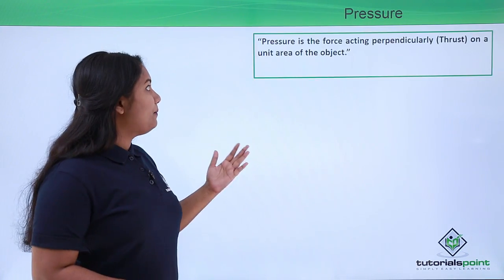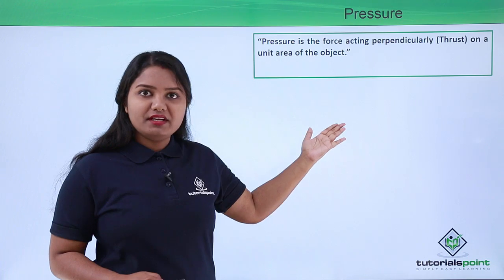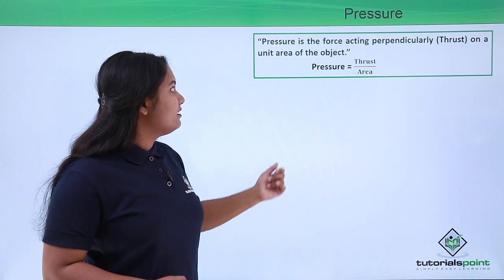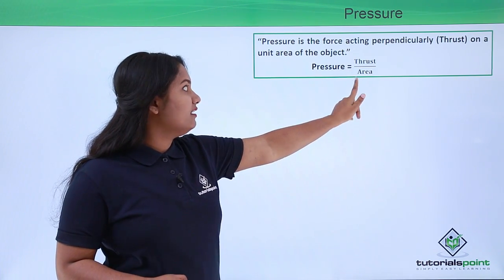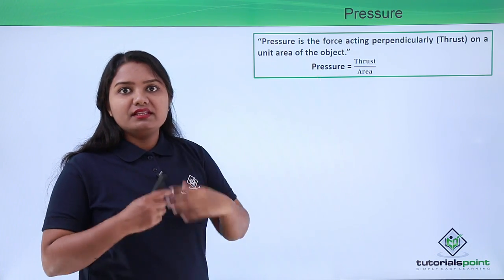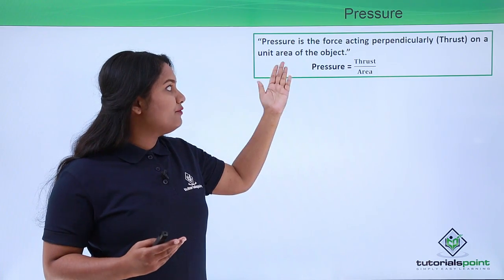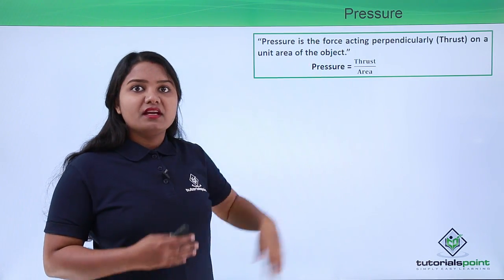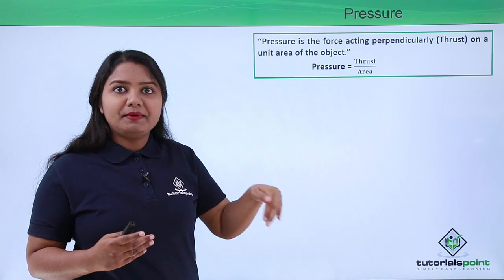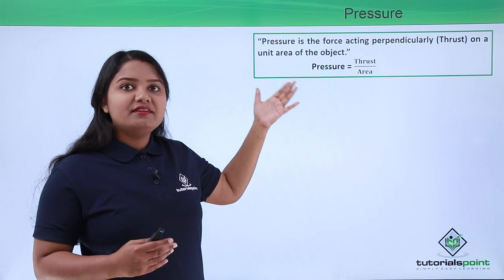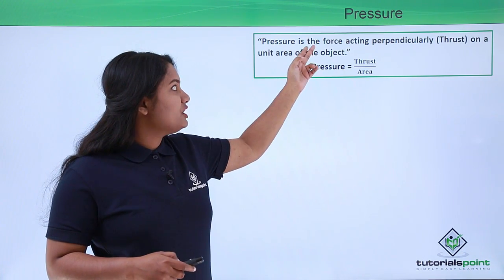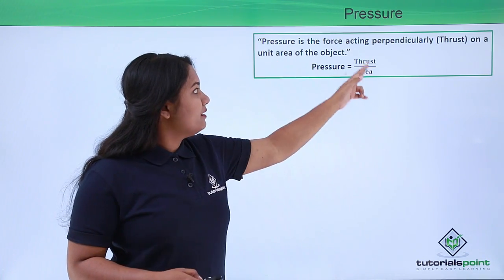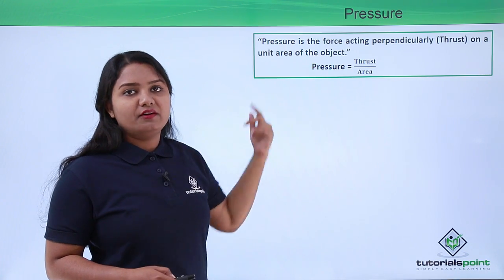So what is pressure? Pressure is the force acting perpendicularly — that is, the thrust — on a unit area of the object. So pressure equals force divided by area, or thrust divided by area. In this video, the terms force and thrust are used interchangeably, since we are always referring to force acting perpendicular to the surface of contact.